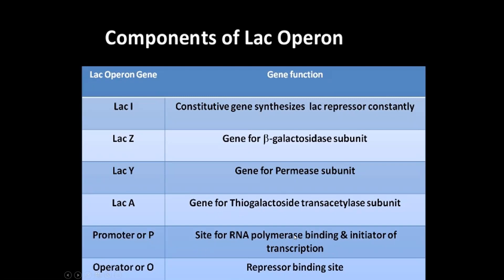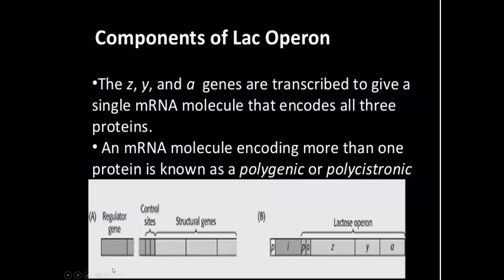The Z, Y, and A genes are transcribed to give a single mRNA molecule that encodes all three proteins — that's why it is called a polycistronic mRNA, because it transcribes three proteins: permease, transacetylase, and beta-galactosidase. An mRNA molecule encoding more than one protein is known as polycistronic.